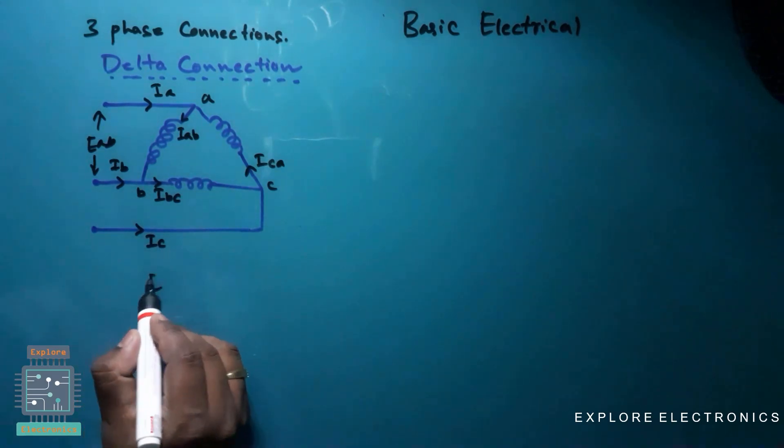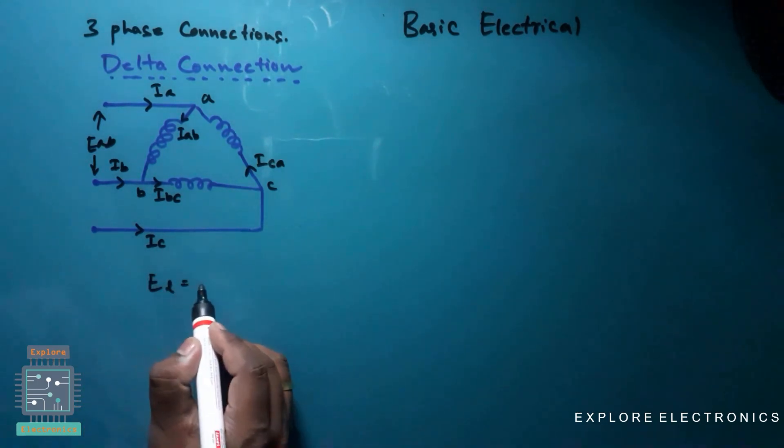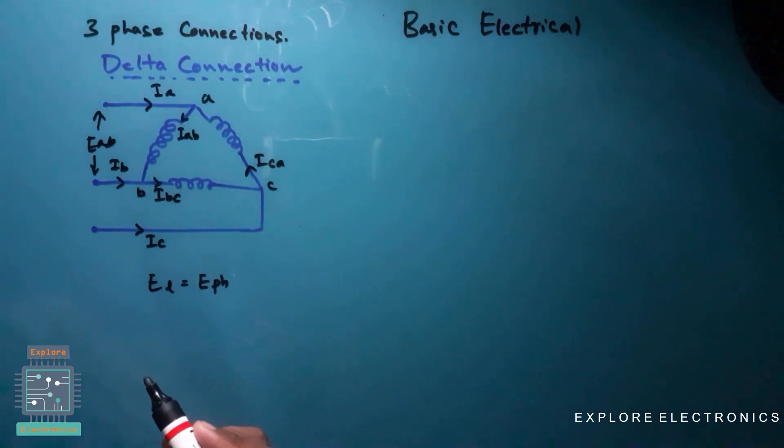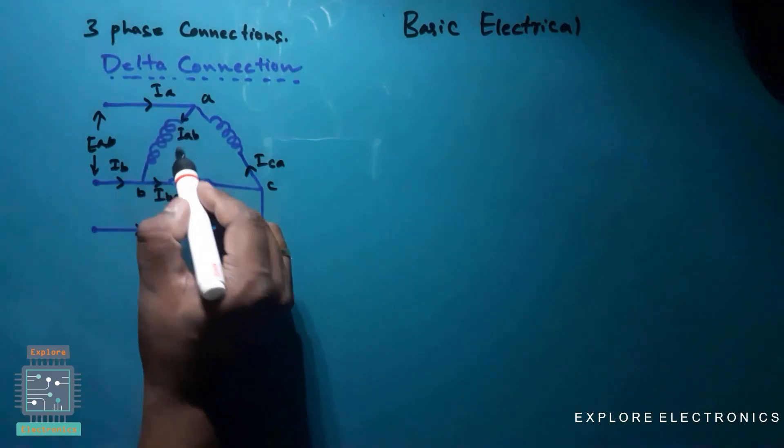So we can write El, that is line voltage, equals Eph. Line current and phase current.